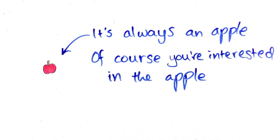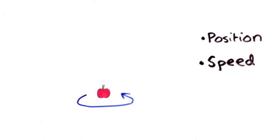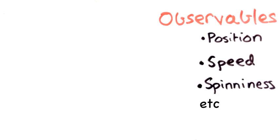Say there's some object you're interested in, then there are all these things you can ask about what it's doing. For example, where is it, how fast is it going, how much is it spinning, etc. We'll call all these things that you can measure about an object its observables.